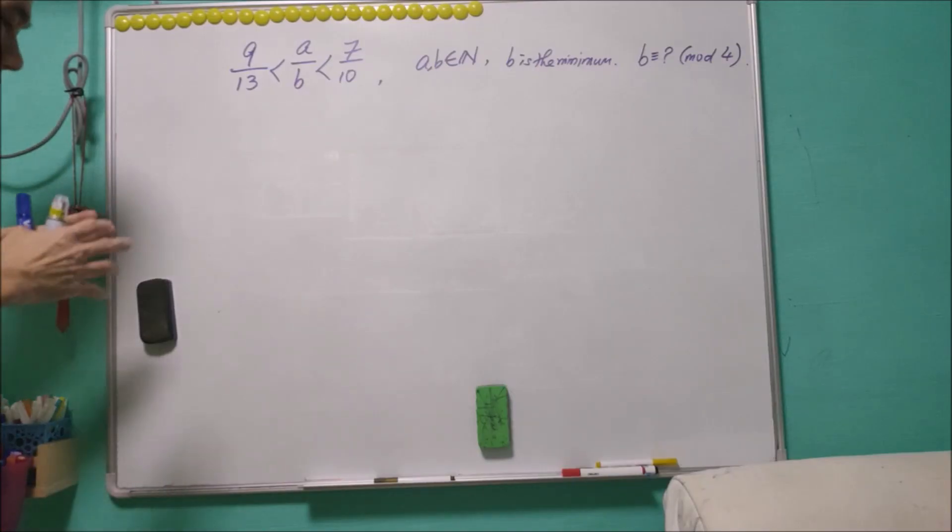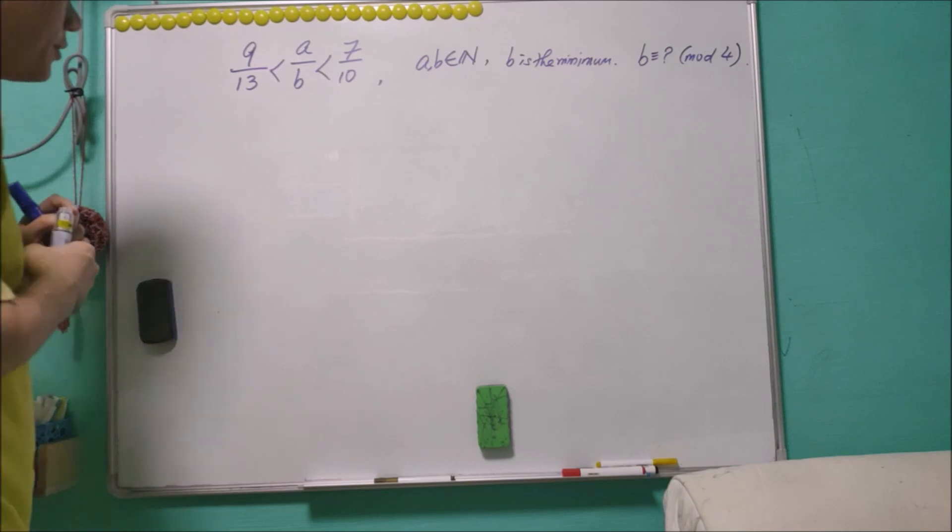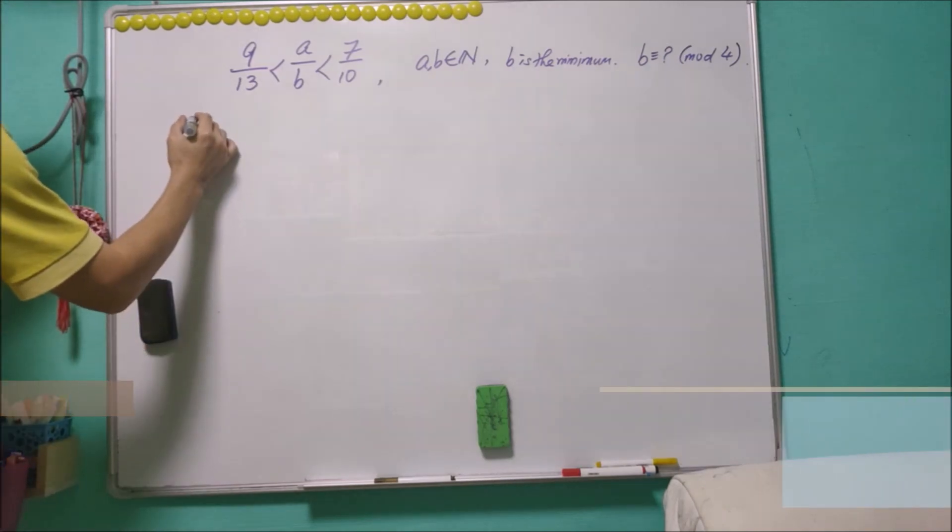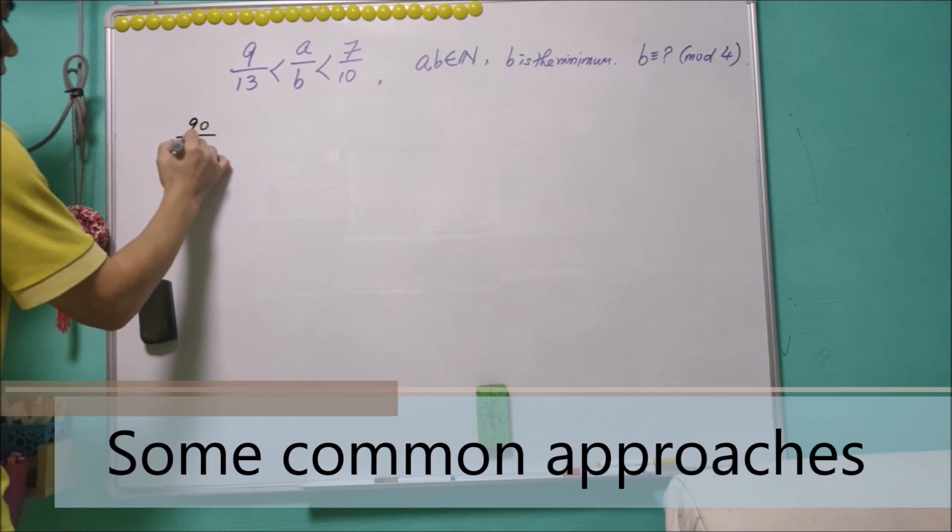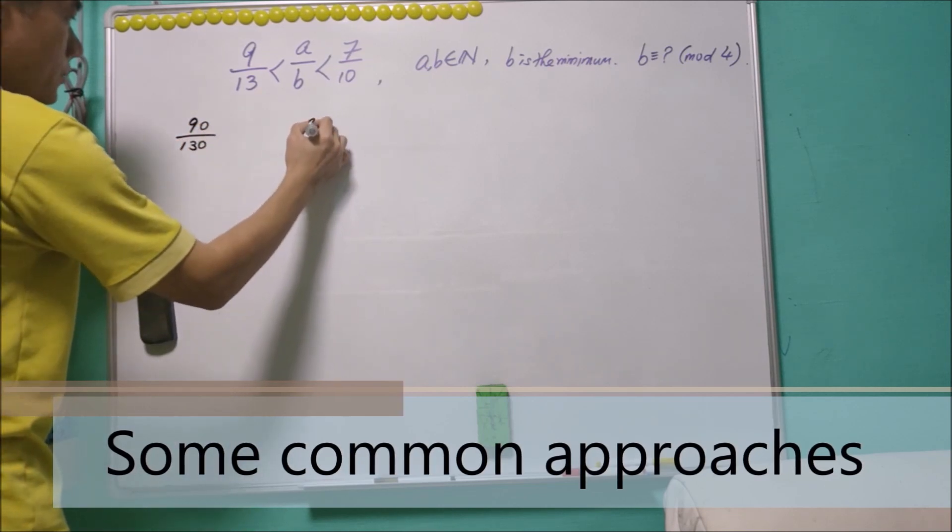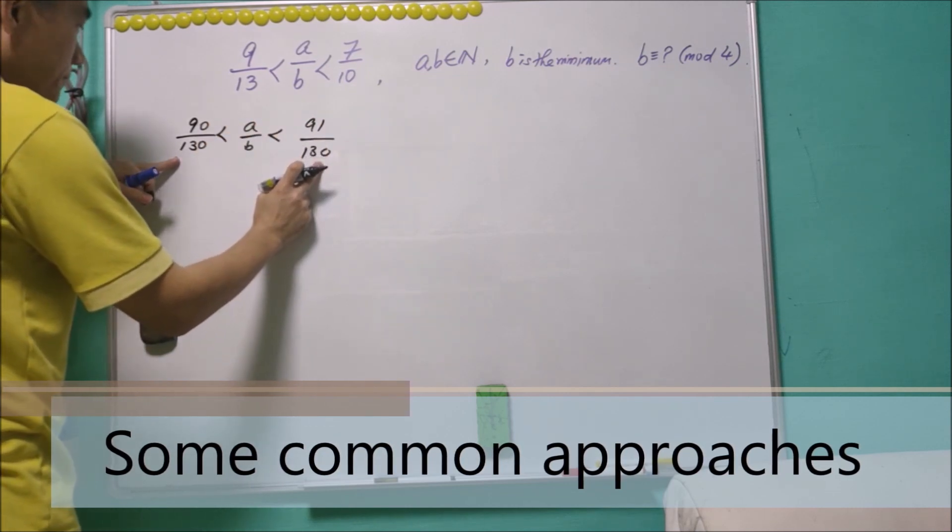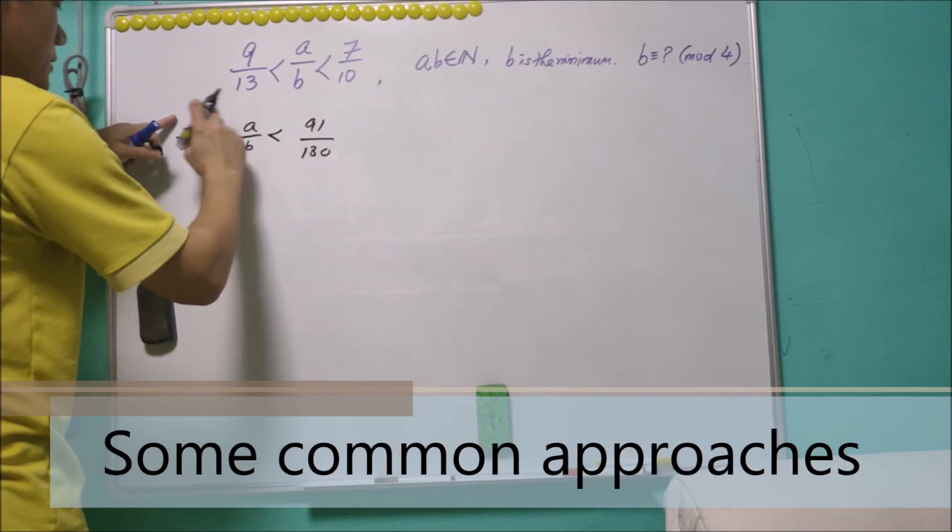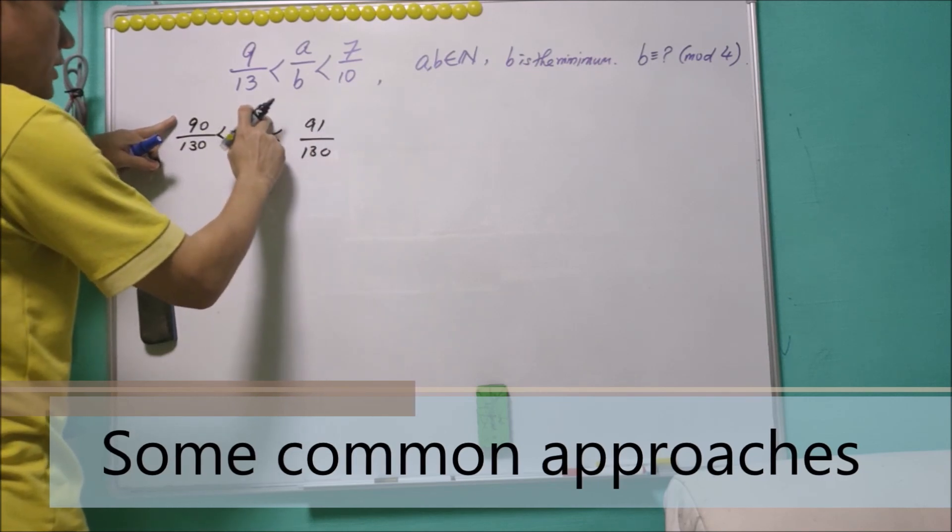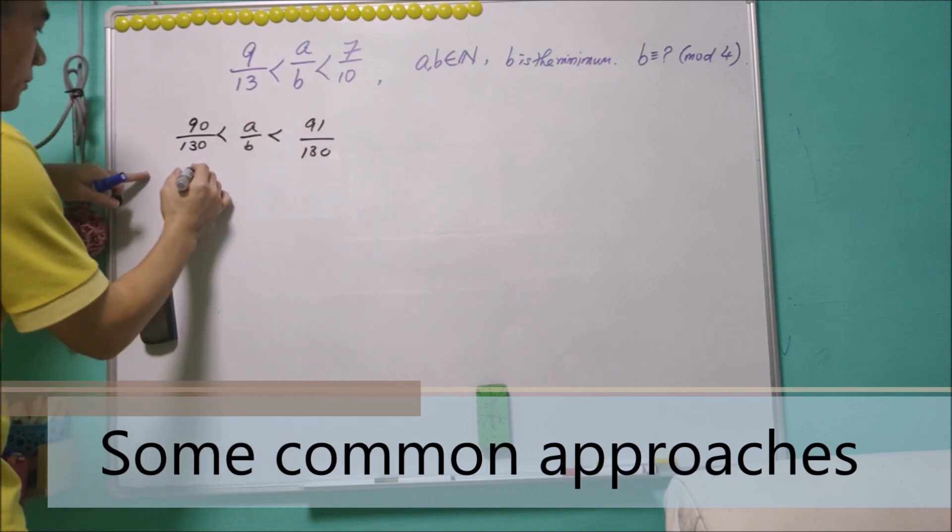The answer that I received, quite a big portion say that the answer is equal to a, that is b is a multiple of 4, and the reason is very simple. This is 90/130 and this is 91/130. Now they have the same denominator but the numerator is 90 and 91. There's no integer in between 90 and 91.